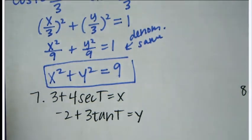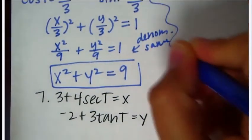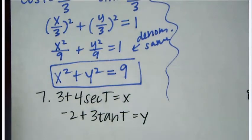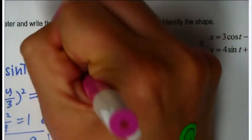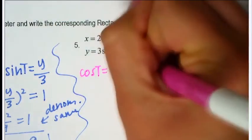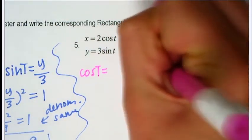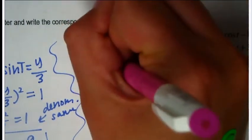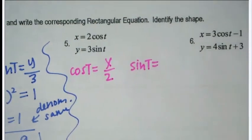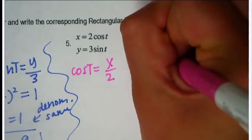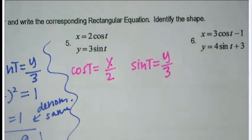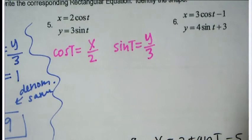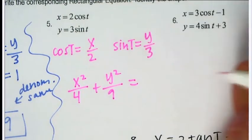For the next one, solve for cosine and sine. Cosine equals x over 2 and sine equals y over 3. Square both and apply the identity: x squared over 4 plus y squared over 9 equals 1.